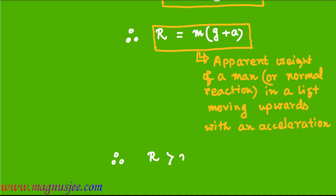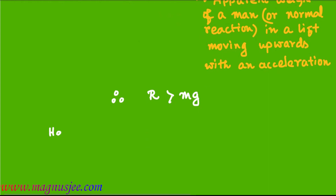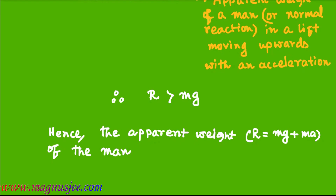Therefore R is greater than mg, which means the apparent weight is greater than the actual weight of the man standing inside the lift. Hence the apparent weight R = mg + ma of the man becomes more than the true weight or actual weight.